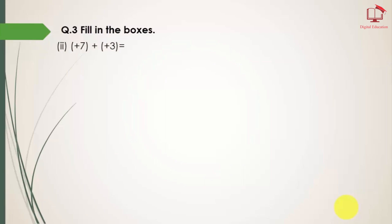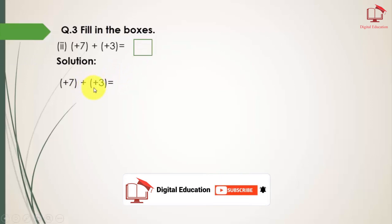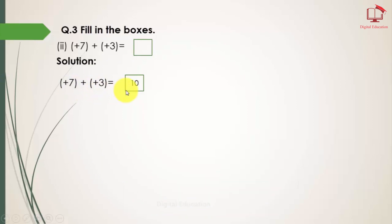Here we have part number 2. You can see we have integers and an empty box. Simply we will add these integers and write the answer in the empty box. Here you can see plus, plus, plus, plus — and 7 plus 3 gives the answer 10.